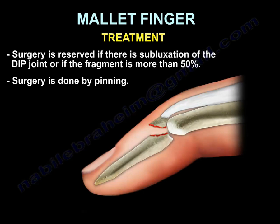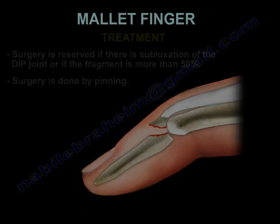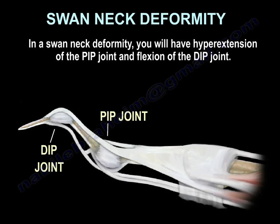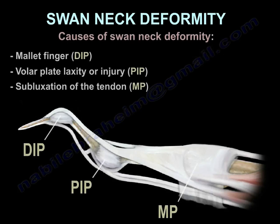Surgery for mallet finger is done by pinning. In a swan neck deformity, you will have hyperextension of the PIP joint and flexion of the DIP joint. The causes of swan neck deformity include a mallet finger at the DIP, volar plate laxity or injury at the PIP, or subluxation of the tendon at the MP joint.